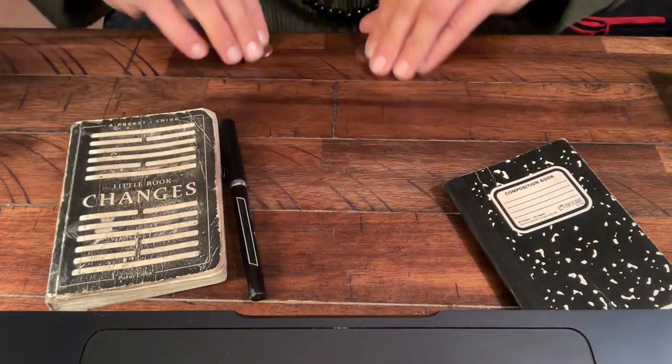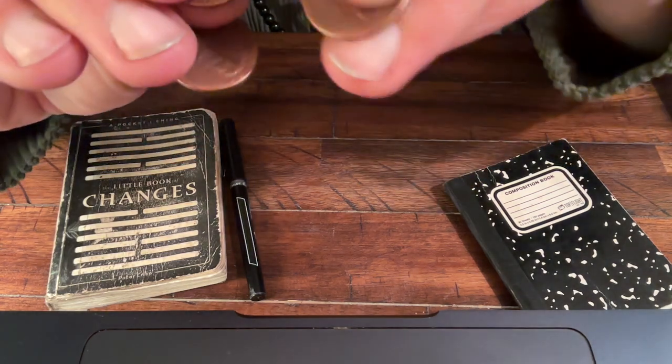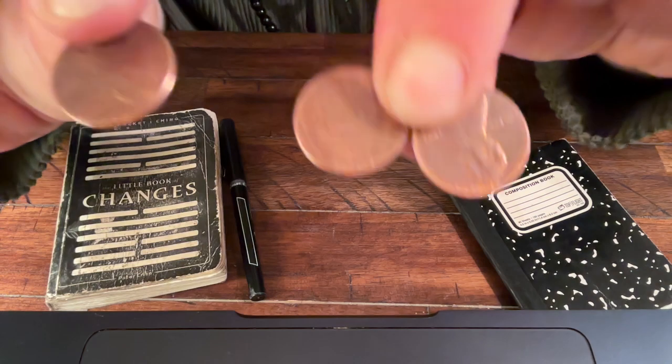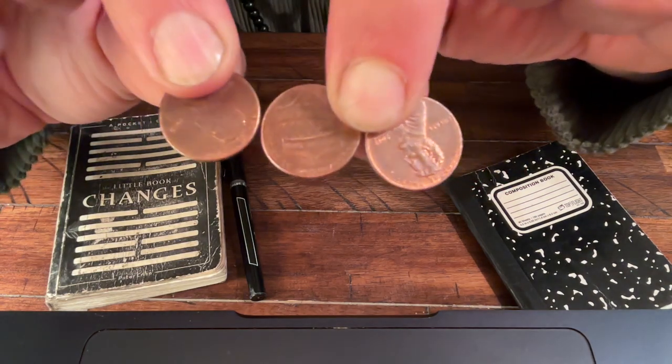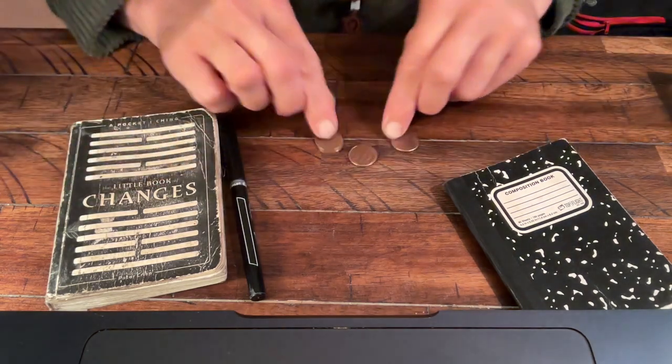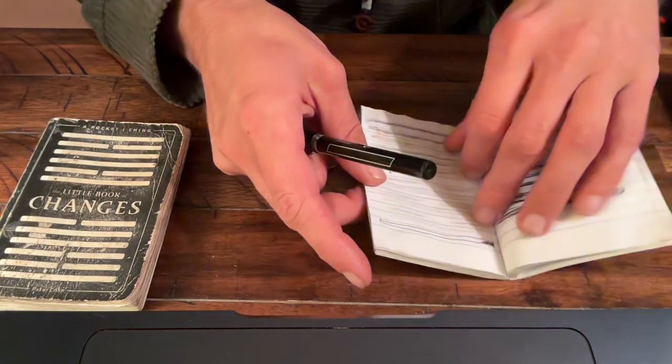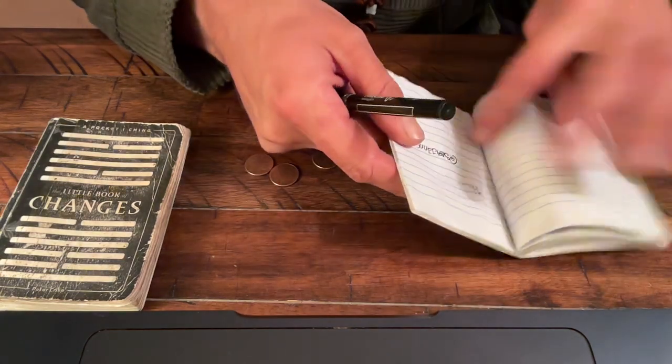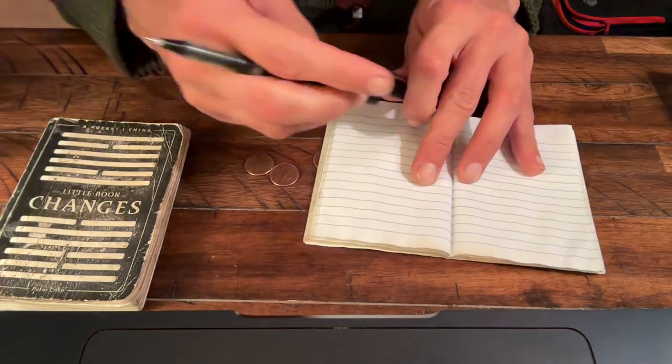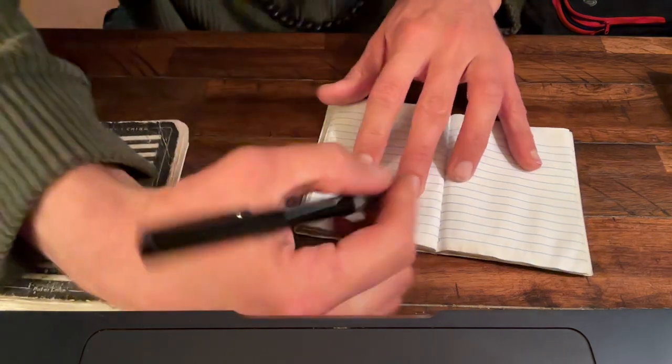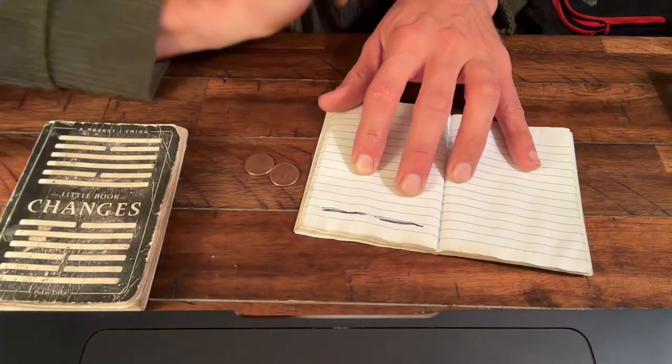So, maybe you can see it. We have two heads and a tail. Remember the odd one out, it's the one that it ends up being. So, tails is yin, and we build our hexagrams from the ground up. So, going from your orientation, start from the bottom, yin, and this broken line there.